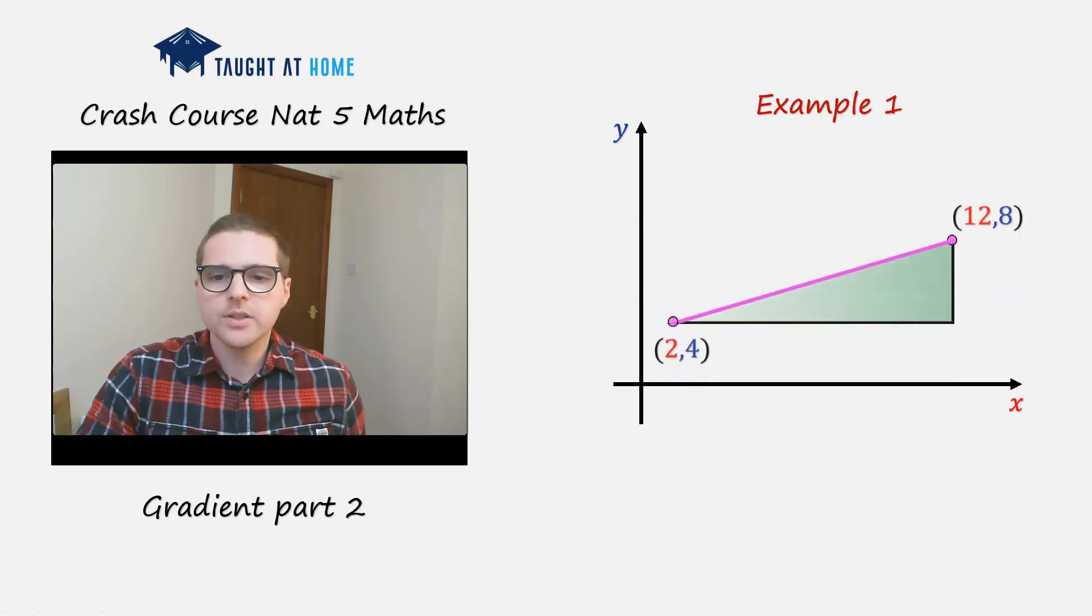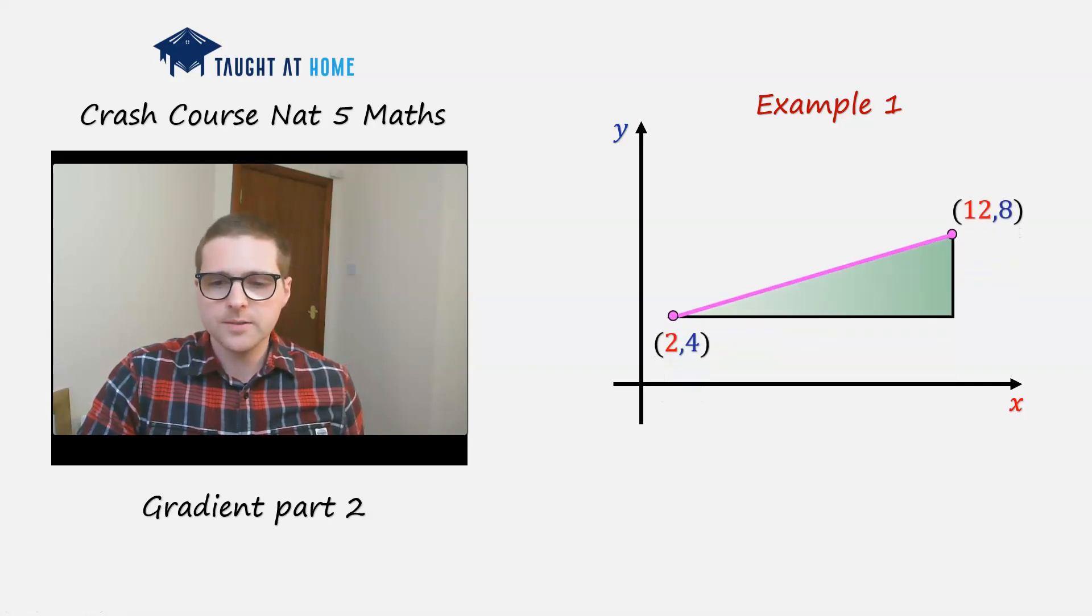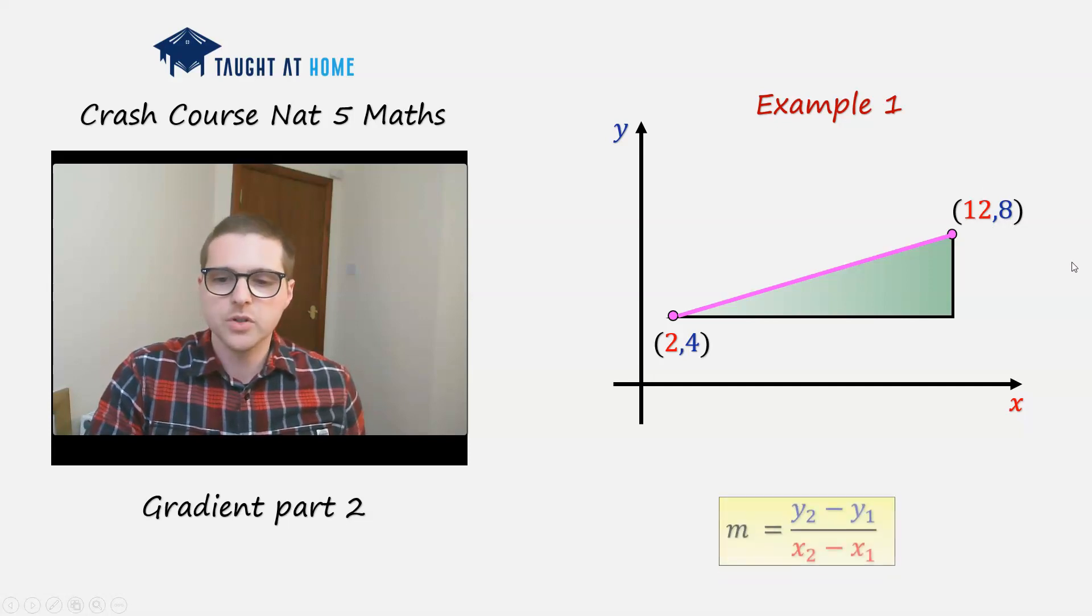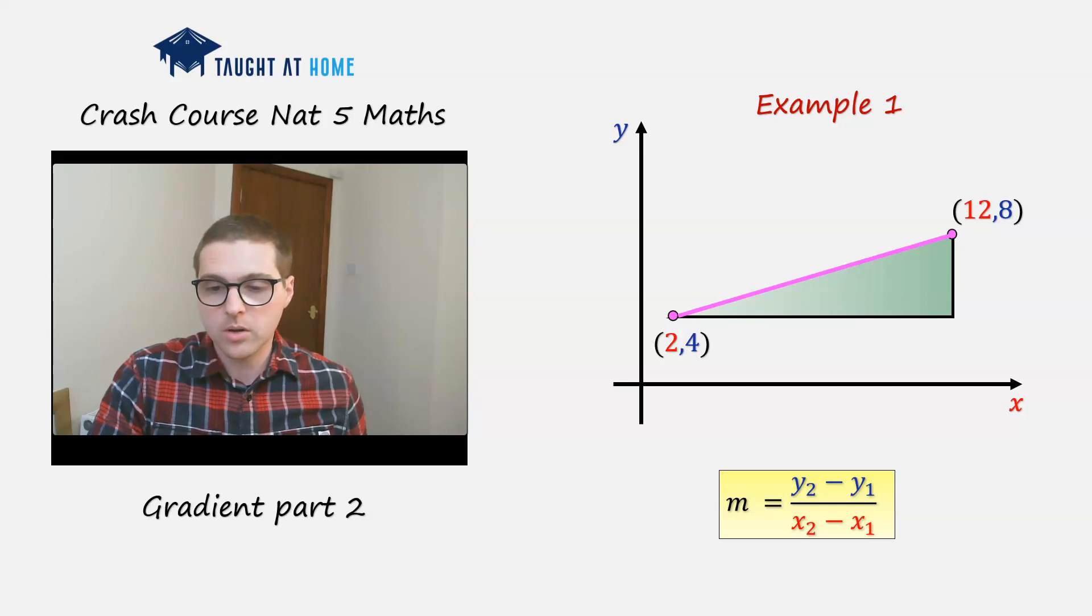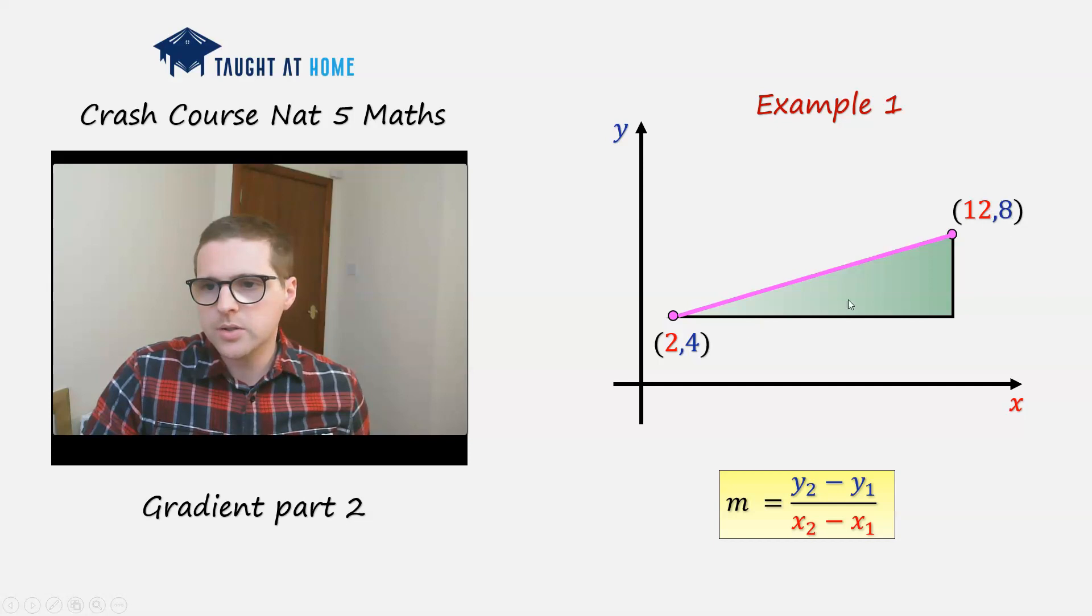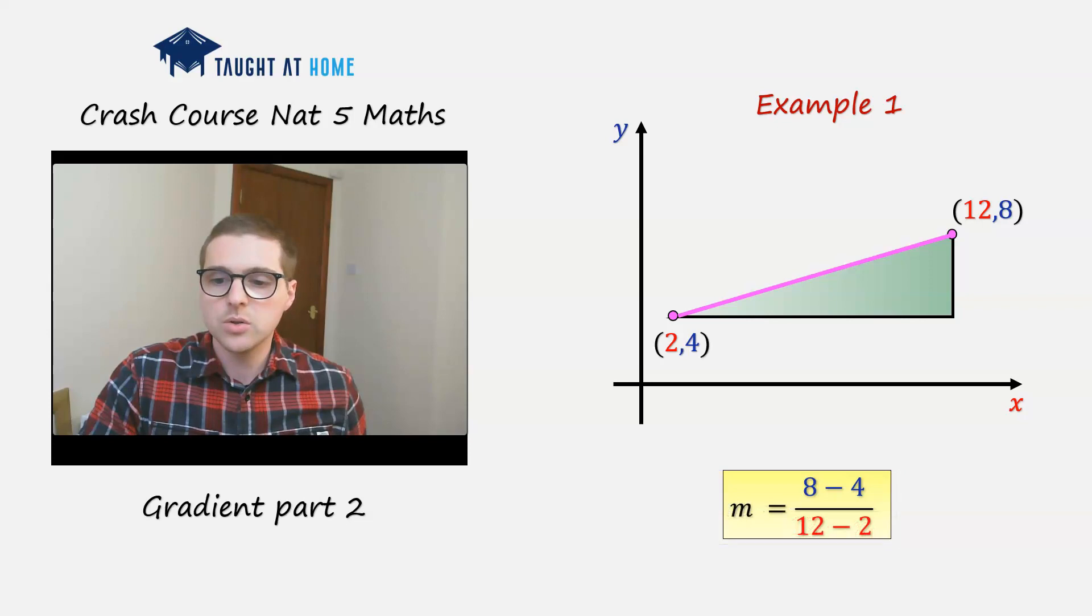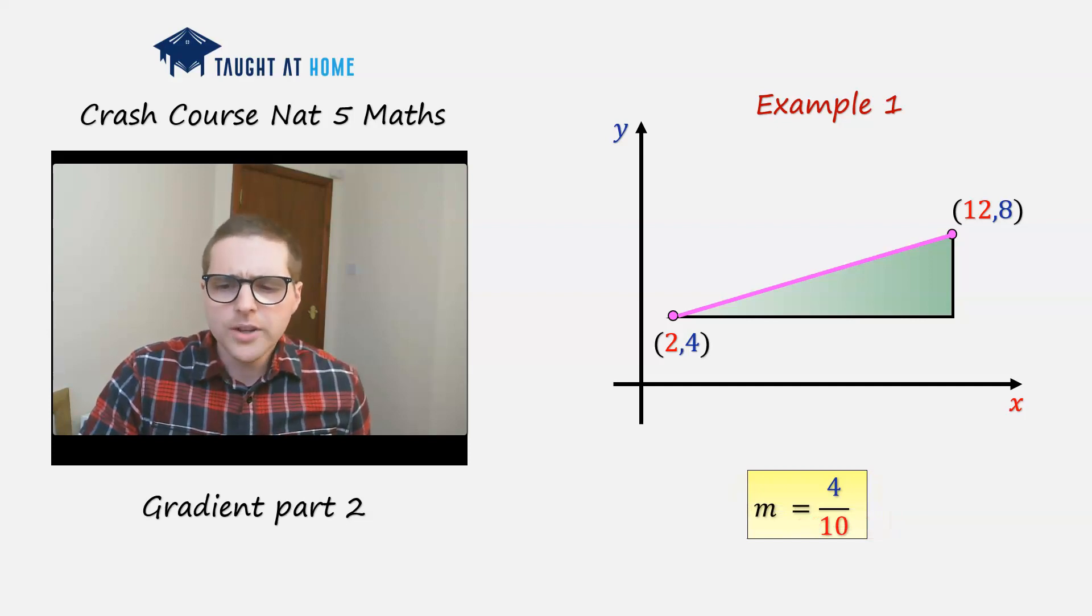Example 1, we're given coordinates here starting at 2 and 4 and 12 and 8, and we're asked to find the gradient. The gradient is given as m equals y2 minus y1 divided by x2 minus x1. We're just substituting the values. This is y2, this is y1, this is x2, and this is x1. So 8 minus 4, x it will be 12 minus 2. So 8 minus 4 would be 4, 12 minus 2 would be 10, and it will be 4 over 10, or you can simplify this further as being 2 over 5.